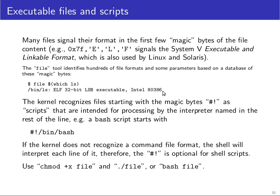There is also a special sequence of magic bytes that starts with the number sign and the exclamation mark — a combination known as a hash bang, or shebang. After this hash bang, you can specify the name of an interpreter that should execute the rest of the file. If the kernel encounters this hash bang, it starts up the executable listed on the rest of the line and passes the filename where the hash bang was found as the first command line argument.